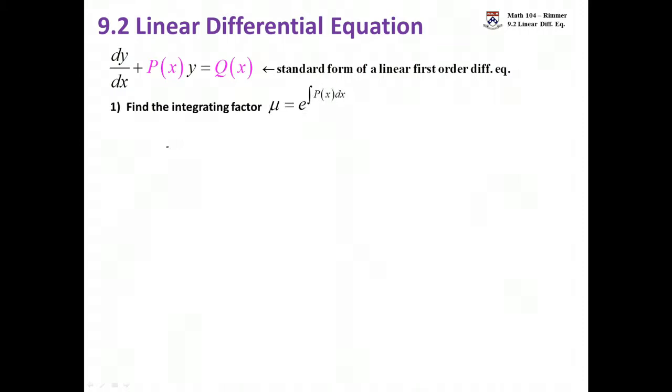First up you have to find the integrating factor, that's the Greek letter mu, and what you do is you're going to use this to help you simplify the entire equation. Now this integrating factor has multiple parts to it. After you identify what p(x) is, then you have to integrate it. So it needs to be something that you can integrate without too much trouble.